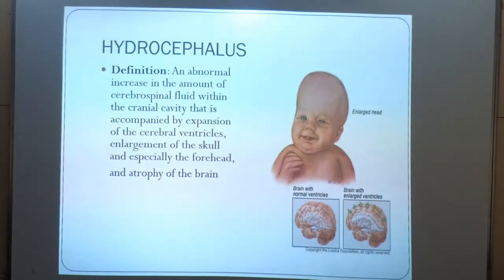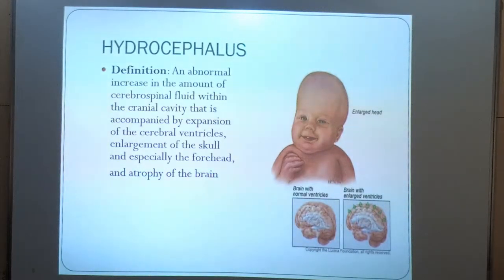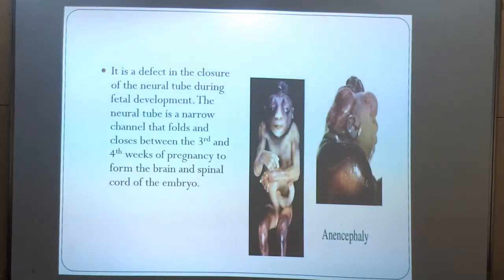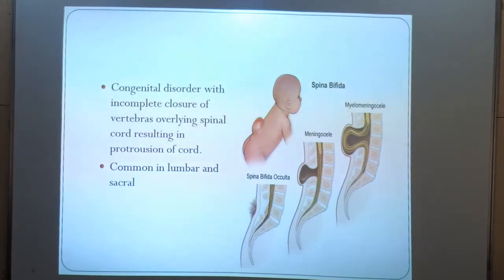This is hydrocephalus, diagnosed by perinatal autopsy: an abnormal increase in the amount of CSF within the cranial cavity accompanied by expansion of cerebral ventricles. Enlargement of the skull, especially the forehead, and atrophy of the brain is seen. This is anencephaly — a defect in the closure of the neural tube during fetal development. This is a congenital disorder with incomplete closure of vertebrae overlying the spinal cord, resulting in protrusion of the cord.